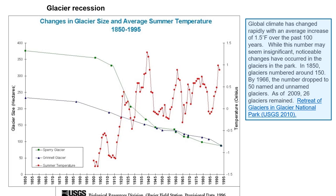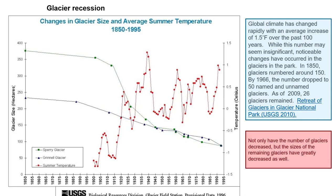So why are glaciers shrinking in Glacier National Park? Global climate has changed rapidly in the past 100 years. Global temperatures increased one and a half degrees Celsius, and that's not the same everywhere. A degree and a half probably doesn't seem noticeable to you, but over time, when we're talking about ice, it makes a big difference. In 1850 there were about 150 glaciers in Glacier National Park. By 1996 there were only 50, and in 2009 there were only 26. We see a steady decline not only in the size of glaciers but also the number. Today we're going to look at what we can expect about changes in size and number of glaciers into the future.